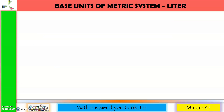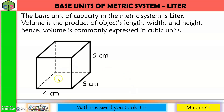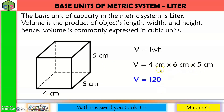The basic unit of capacity in the metric system is liter. Volume is the product of an object's length, width, and height, so volume is commonly expressed in cubic units. For example, a rectangular prism with length 4 cm, width 6 cm, and height 5 cm has a volume of 4 × 6 × 5 = 120 cubic centimeters.